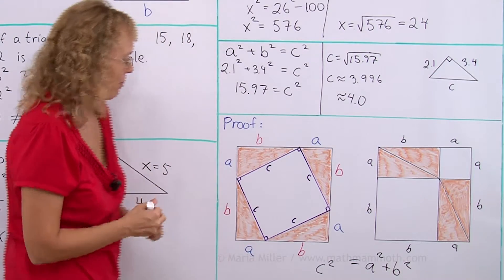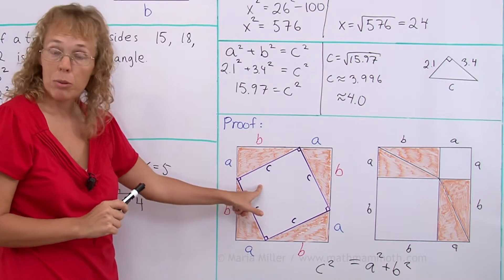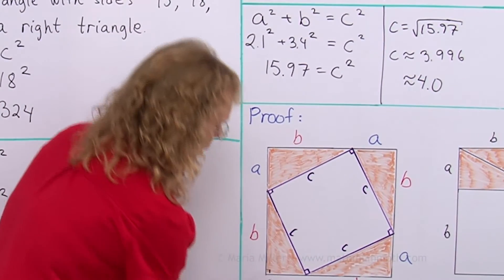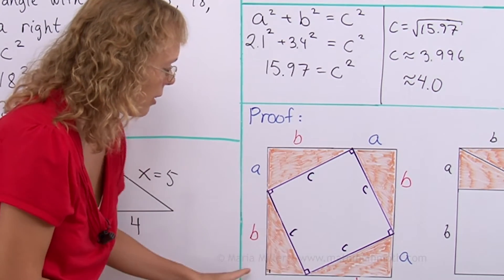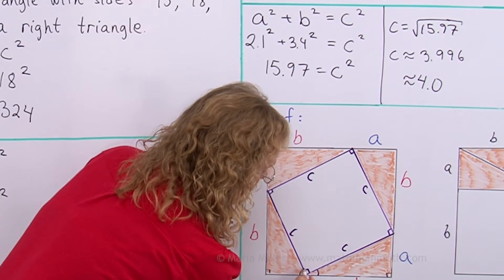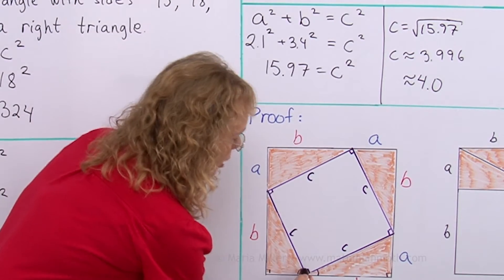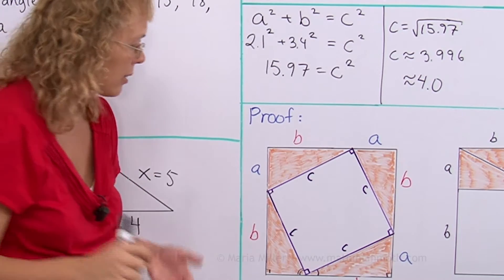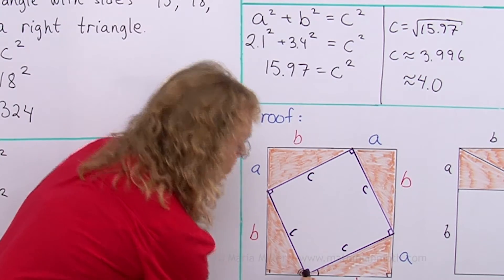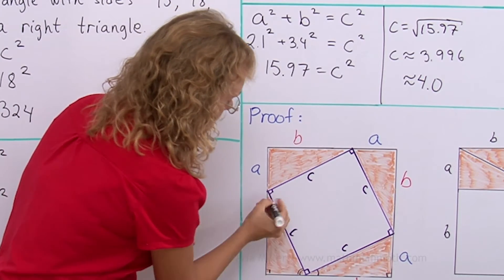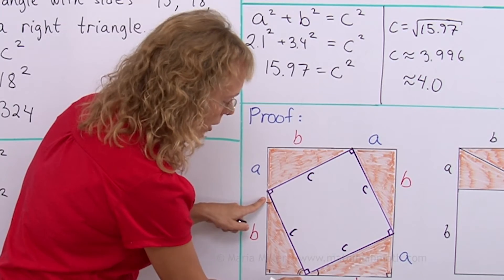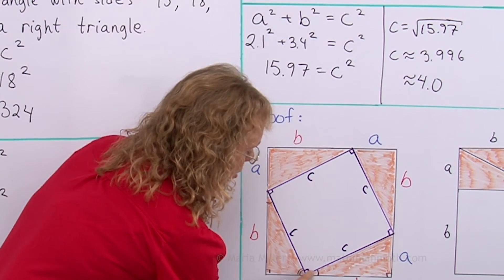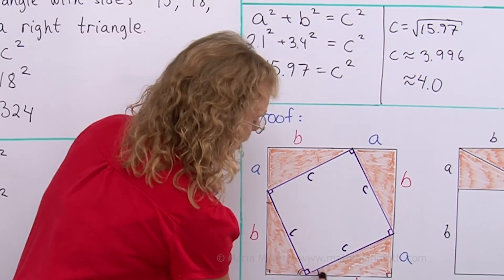You might wonder how we know the middle shape is actually a square — how do we know those are right angles. When you have two right triangles meeting at a point, the two acute angles and the right angle form a straight angle of 180 degrees. The two acute angles together equal 90 degrees because they come from a right triangle, where angles sum to 180 degrees. So the remaining angle must be 90 degrees to make 180 total, confirming the middle shape is a square.